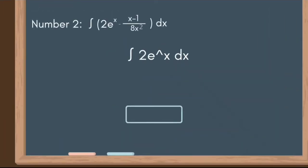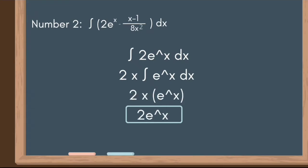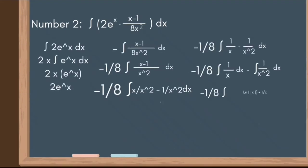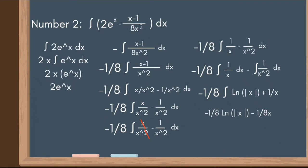Now let's proceed to number two, where the given is the integral of (2eˣ - (x-1)/(8x²))dx. We use the property of integrals to separate 2eˣ and (x-1)/(8x²). On the first part, the integral of 2eˣdx: we move 2 outside, giving us 2 times the integral of eˣdx, which simplifies to 2eˣ.